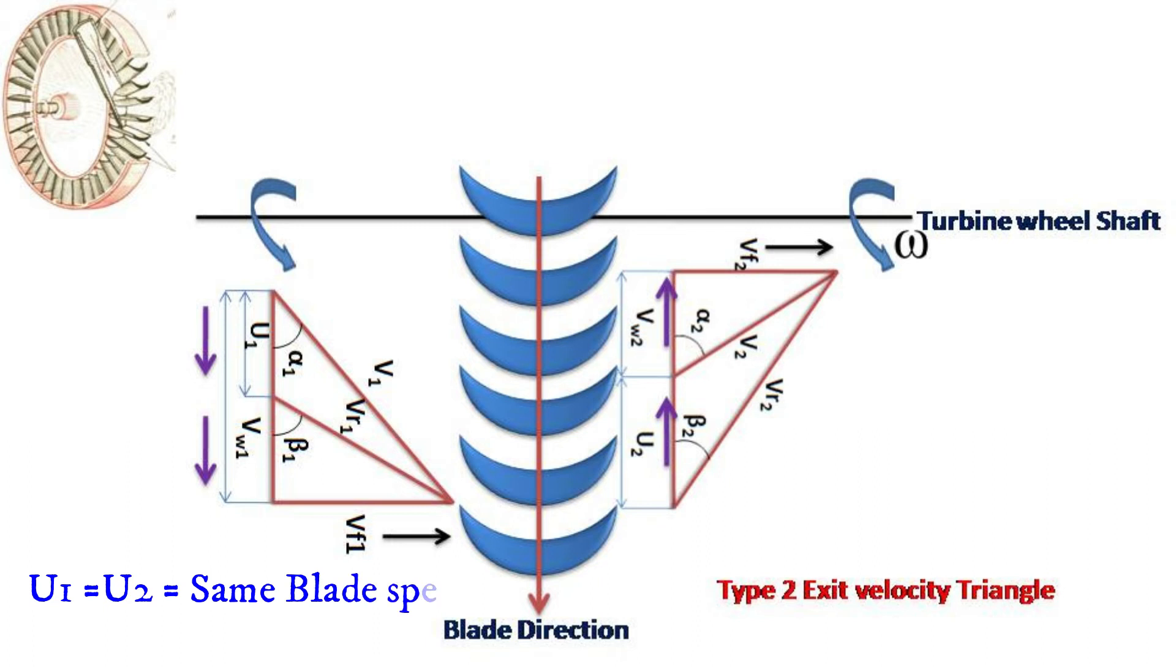Since blade moves with same velocity, u1 is equal to u2 and hence there is no problem with the direction of the blade speed u1 and u2 in velocity triangles.